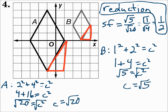Remember, when you're finding side lengths that are diagonal, you can do the distance formula or you can make right triangles where those diagonals are the hypotenuse and do the Pythagorean theorem. It's your choice. Since the scale factor was between 0 and 1, it was a reduction. And remember, whenever the scale factor is greater than 1, it's an enlargement.